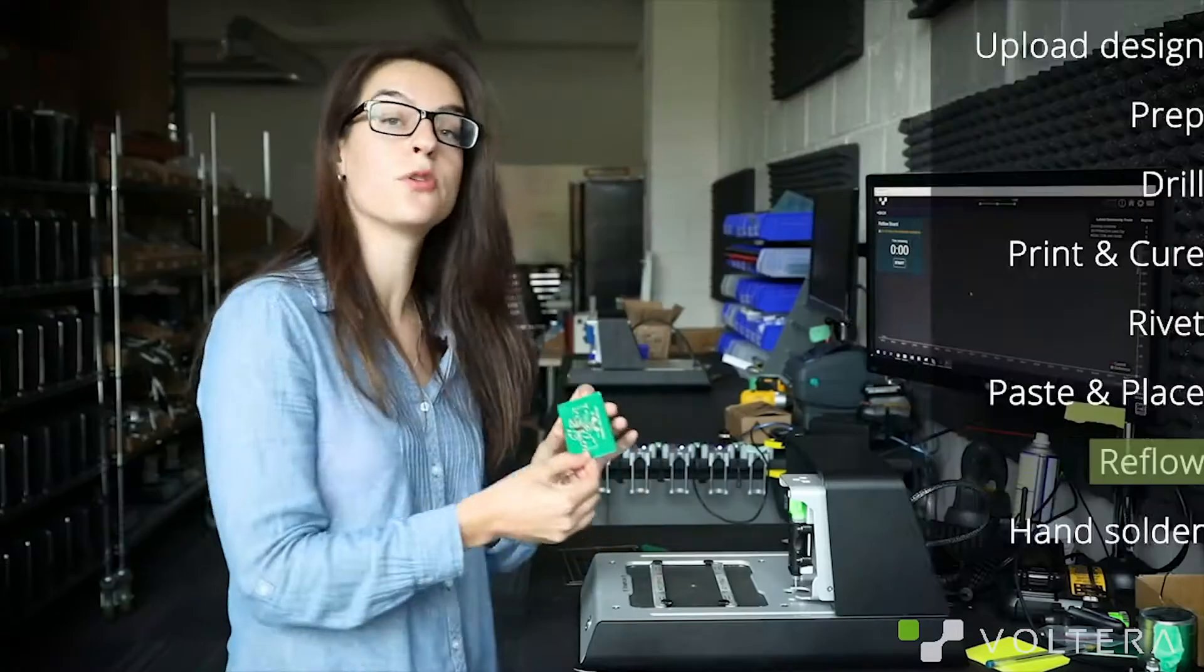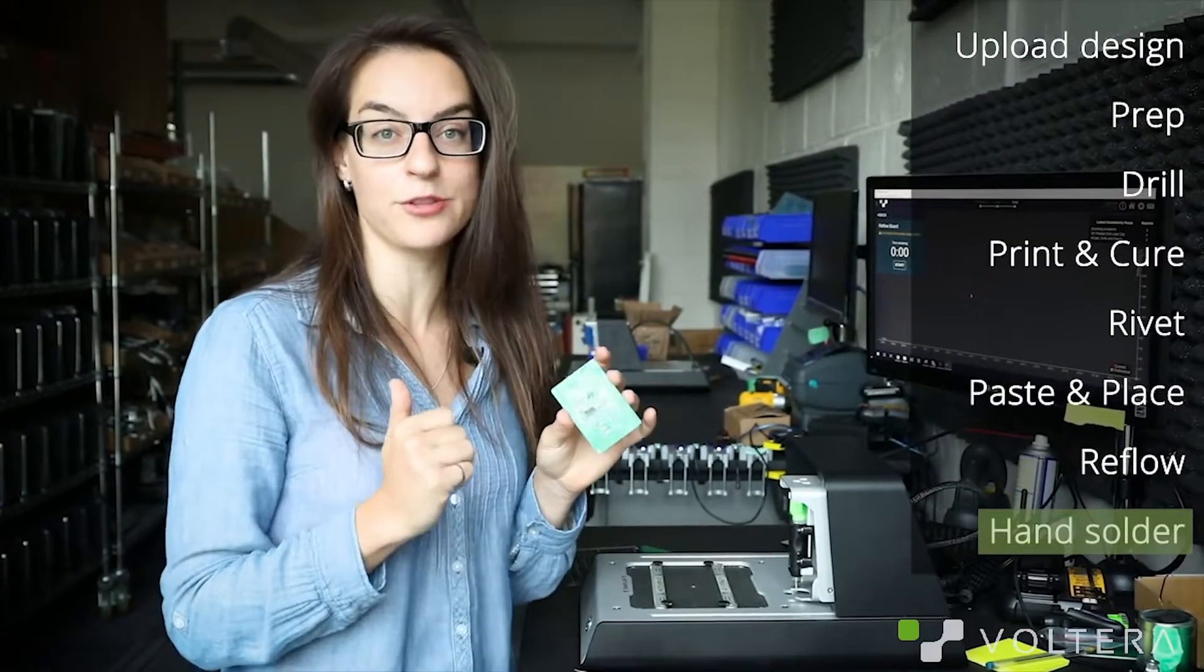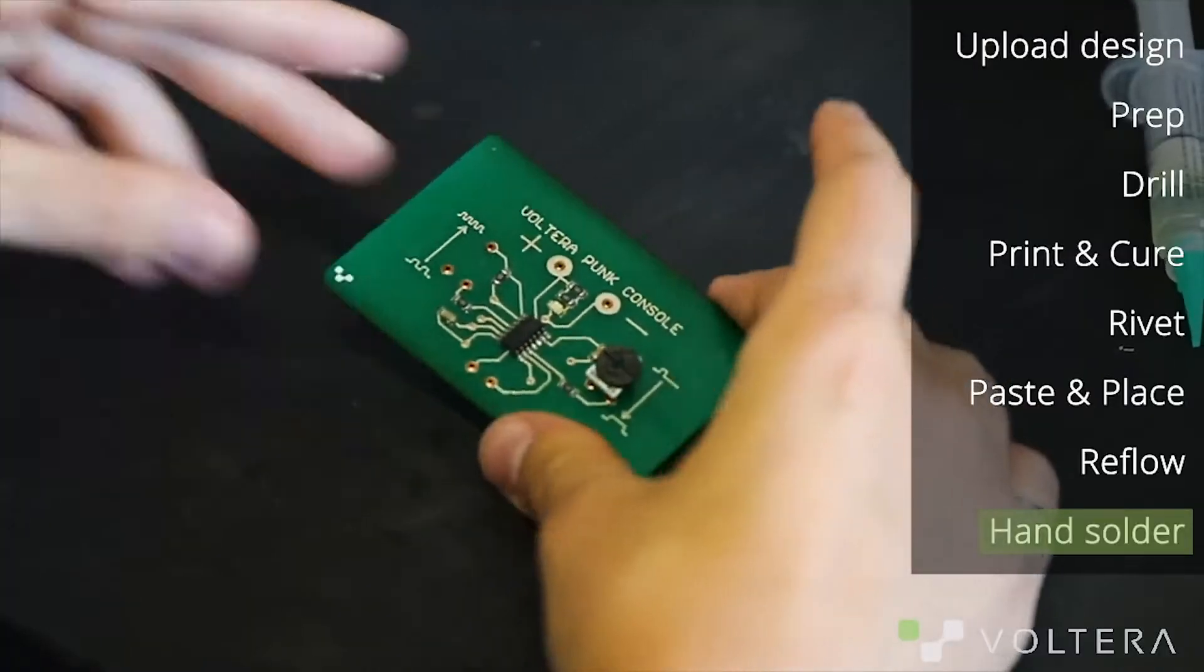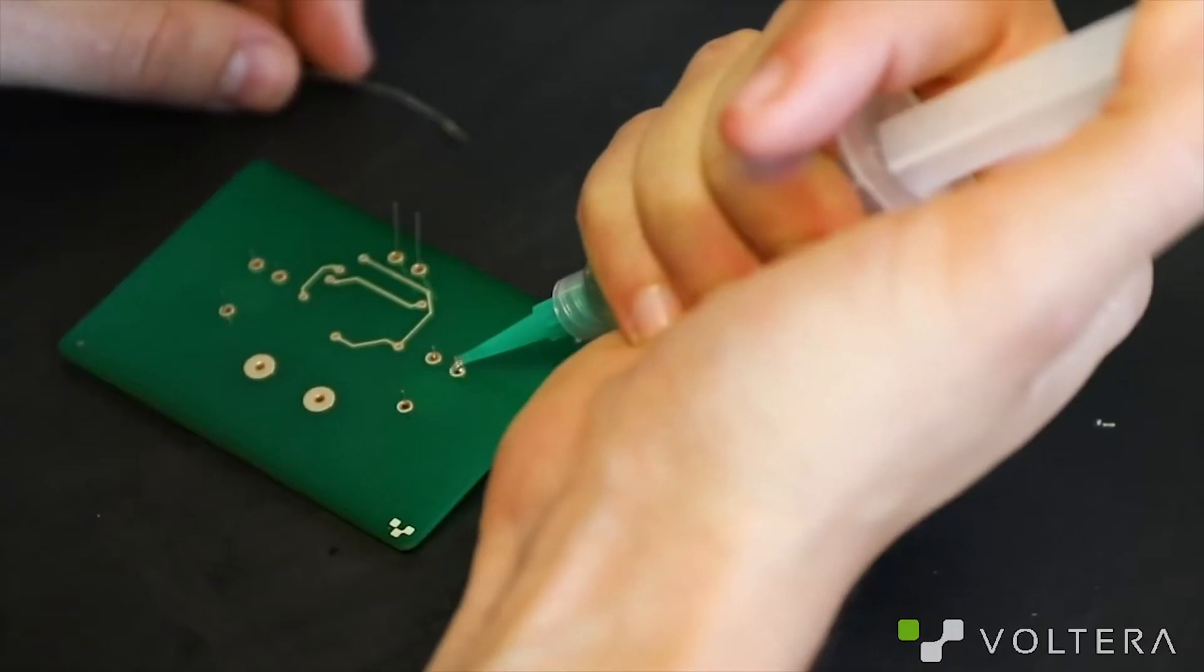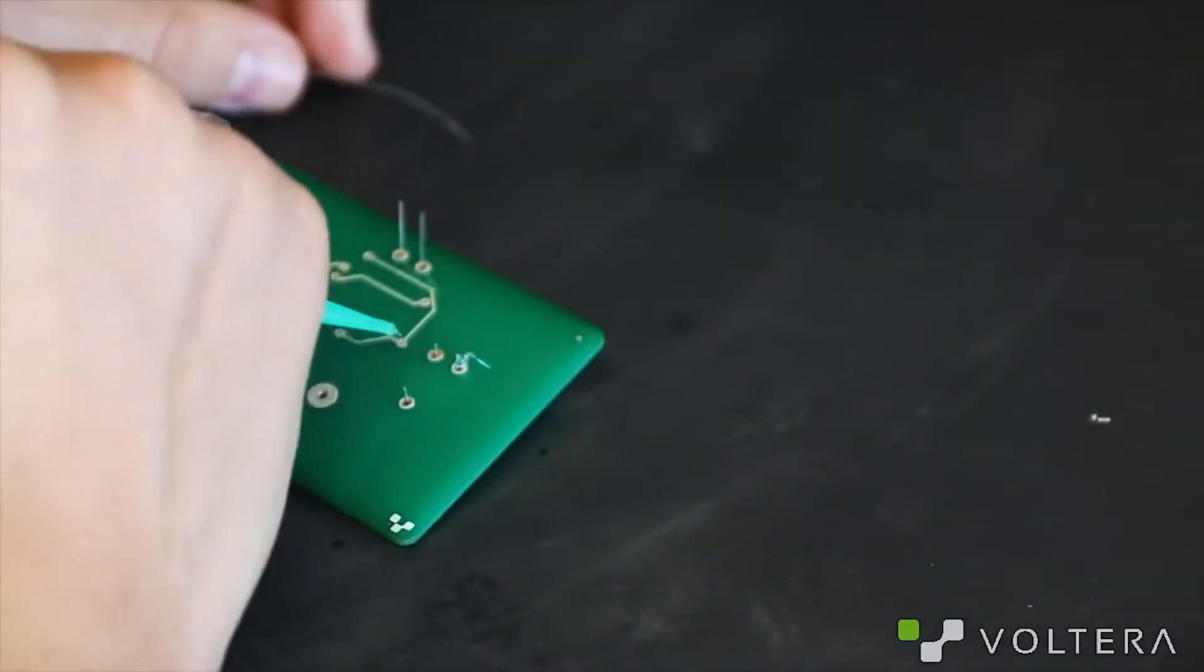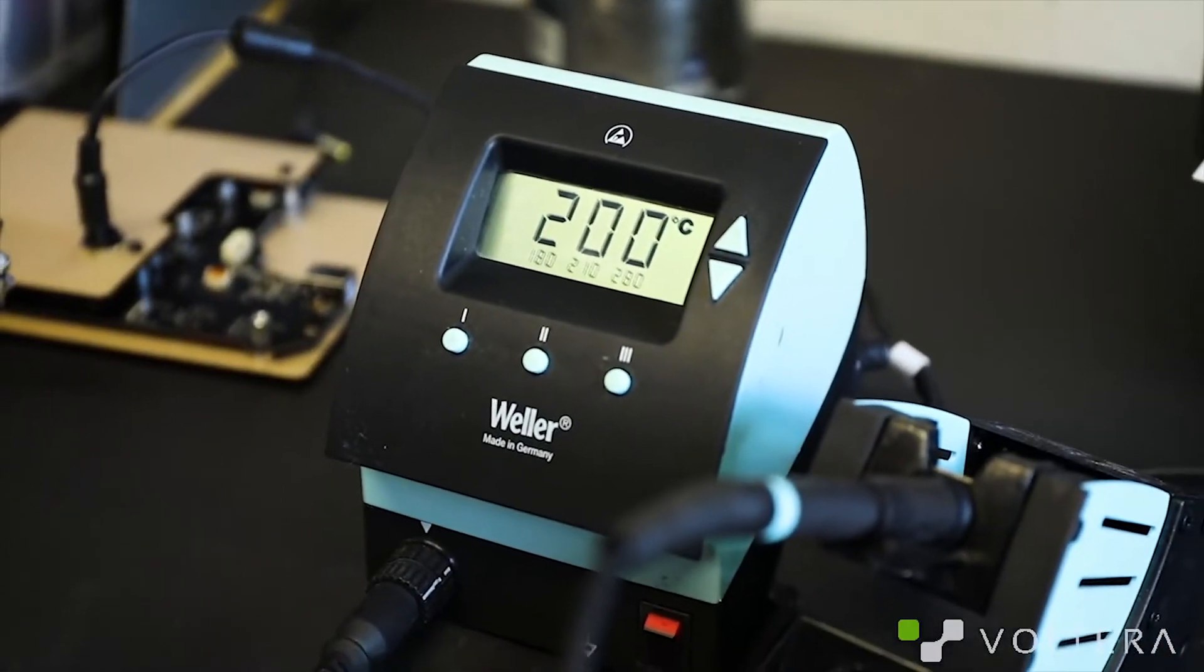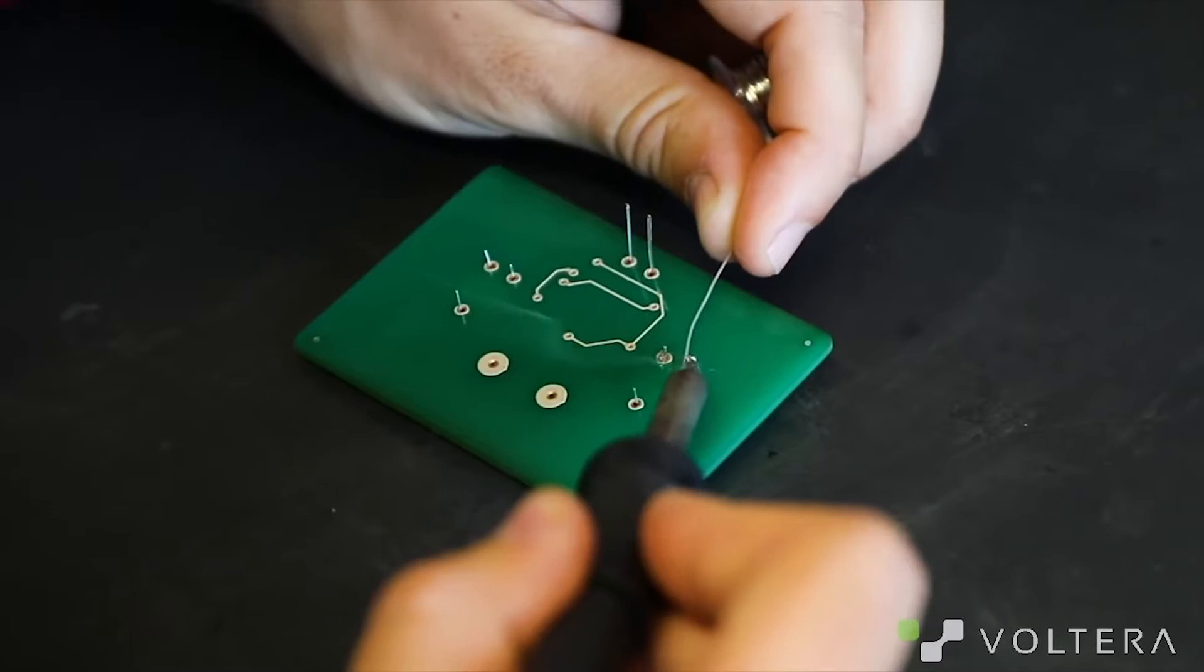This board does have a few through hole components, so I'm going to go solder them using the provided solder wire. I'm using plenty of flux and my iron is set to 200 degrees Celsius because the traces are heat sensitive.